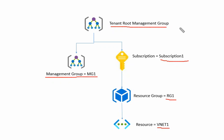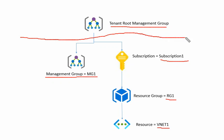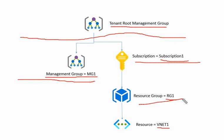We can test at what scope we can define the policy — whether we can implement it at the root level, management group level, subscription level, resource group level, or resource level. That is the first thing we will identify. The second thing is what we can keep in exclusion.